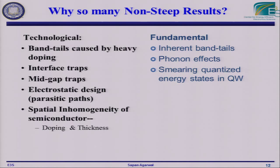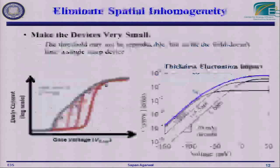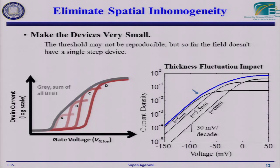Is there anything we can do? The first thing is to really eliminate spatial inhomogeneity by making the devices very small. If you have a large device, you get multiple thresholds that add up and give a very smeared-out turn-on. Starting with a very small device at least eliminates the different thresholds combining together. There may be reproducibility issues, but given how far we are from even a single good device, seeing that would be a great start.